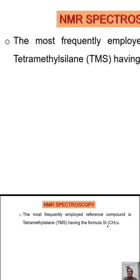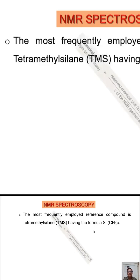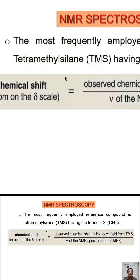Tetramethylsilane (TMS), written as Si(CH₃)₄, is the most frequently employed reference compound in NMR. This is the equation to calculate the chemical shift — the definition of chemical shift as measured in the unit PPM, denoted by Delta. Delta is the observed chemical shift in Hertz downfield from TMS, divided by the frequency of the NMR spectrometer in megahertz.